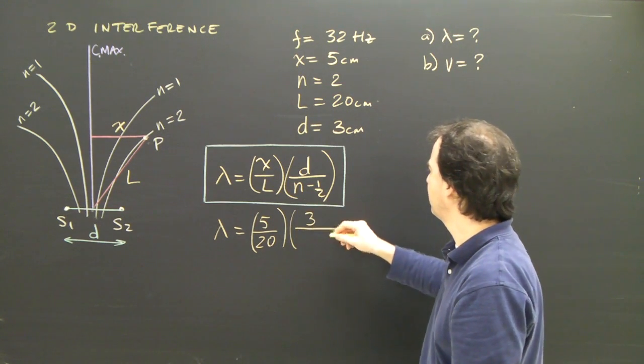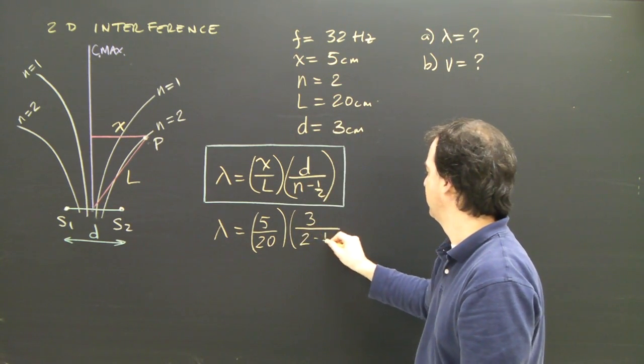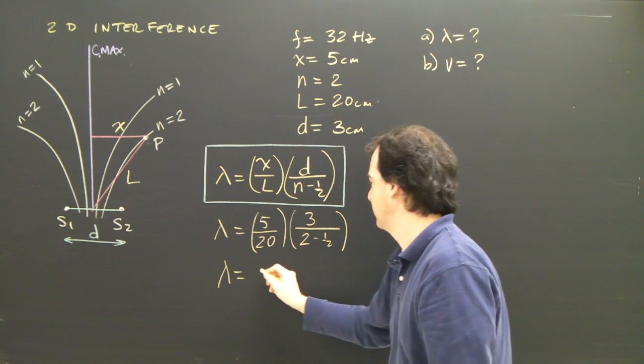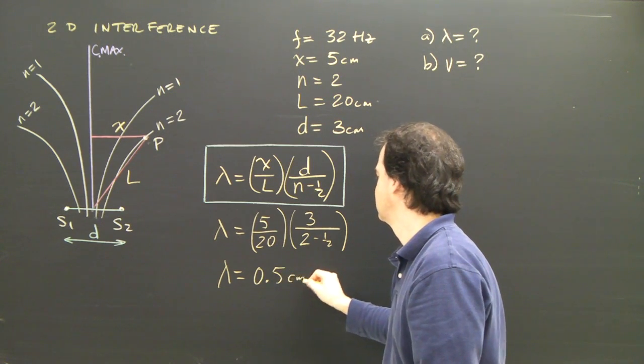So it's 3 over, the nodal line was 2 minus 1 half. I plug that into the formula and I get that lambda is 0.5 centimeters.